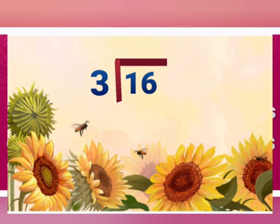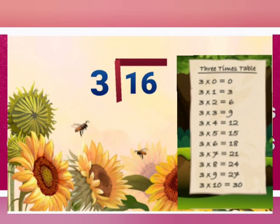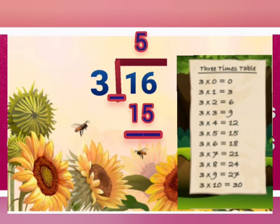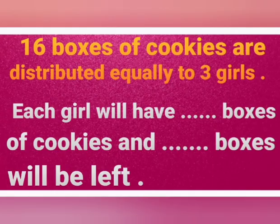By referring to the multiplication table of the number 3, this number is 5, since 3 times 5 is equal to 15. Now we will subtract 15 from 16: 6 minus 5 is equal to 1 and 1 minus 1 is equal to 0. The quotient is 5 and the remainder is 1. So each girl will have 5 boxes of cookies and 1 box will be left.